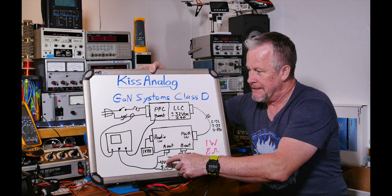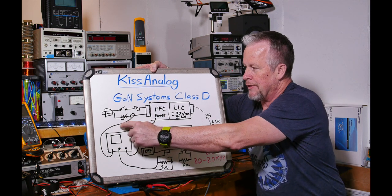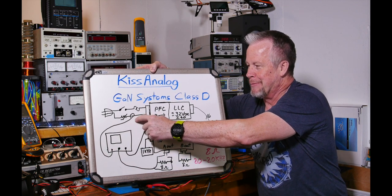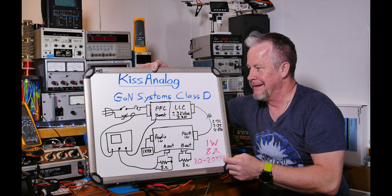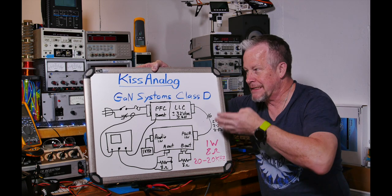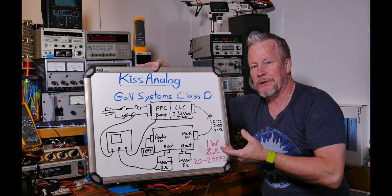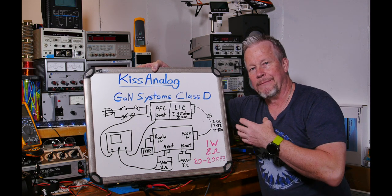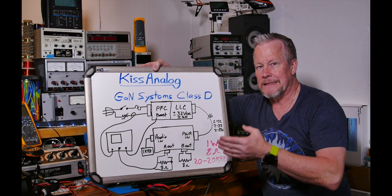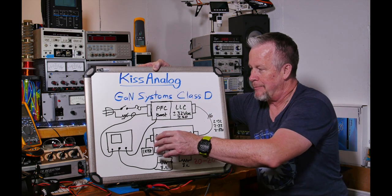We'll look at one of the sides so you have something to reference, and we'll also look at a current probe so you can see the current. That's really where the magic happens on the PFC — how it makes the current look. Voltage is going to look sinusoidal at the plug, and we want the current to look sinusoidal too, so there's no EMI and it's power factor corrected — voltage and current are in phase.